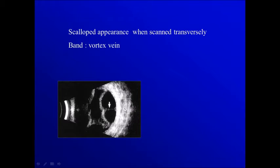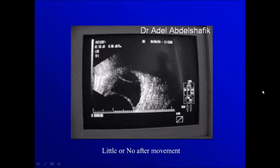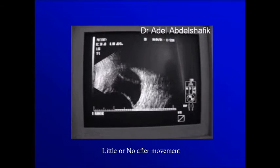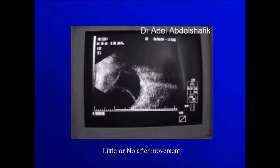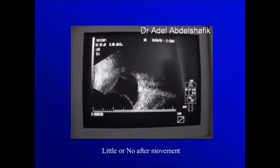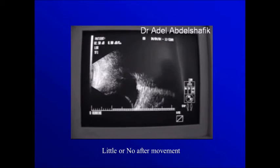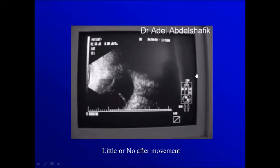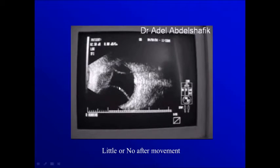Sometimes you can see a vessel — one of the vortex veins — crossing this sub-choroidal area. You can notice here this thick membrane becoming continuous with the walls.